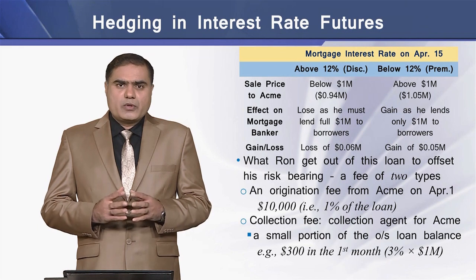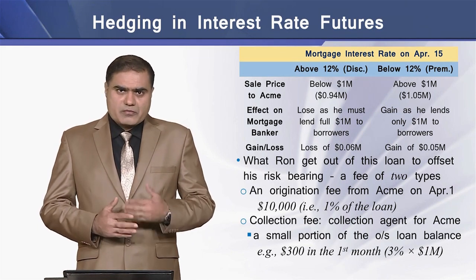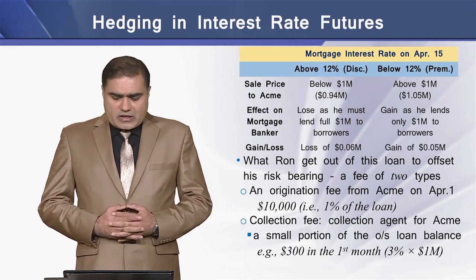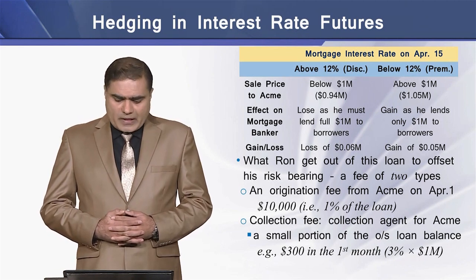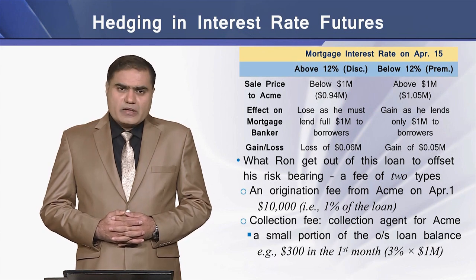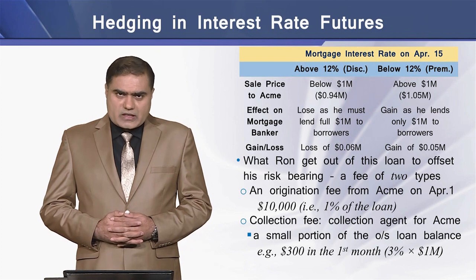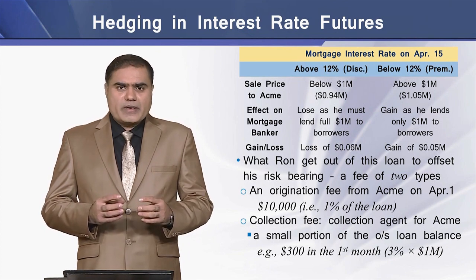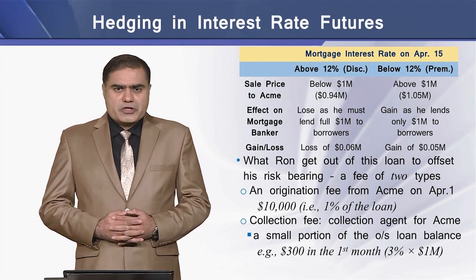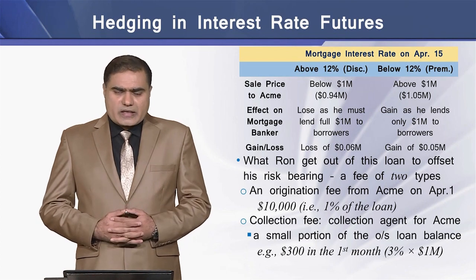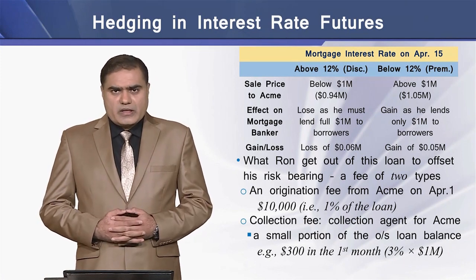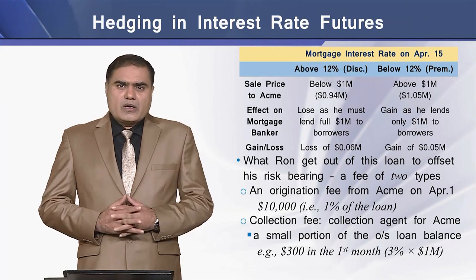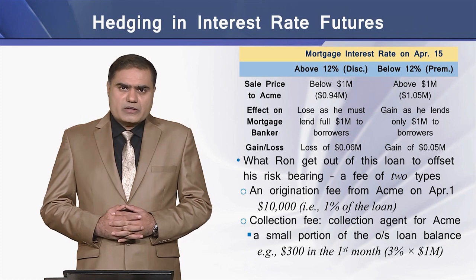The effect on the mortgage banker is that in case of a rise in interest rates, there will be a loss to Ron as he must pay the full amount of $1 million. In case the interest falls below 12%, there will be a gain to Ron as he will again be paying a maximum of $1 million. In the first situation, there will be a loss of $60,000 to the mortgage banker, and in case the interest rate goes below 12%, there will be a gain of $50,000 to the mortgage banker.